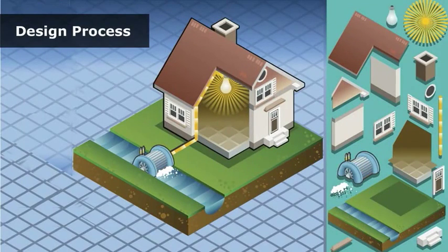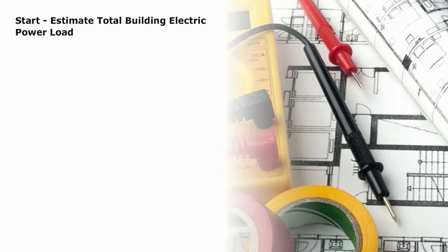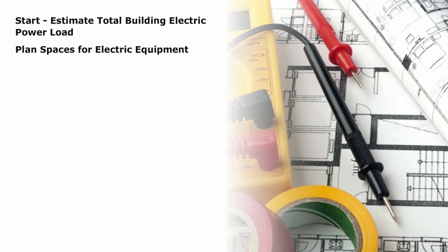Designers follow a process in developing their vision for their projects. Electrical engineers start the process of designing electrical systems by estimating the total building electrical power load. Then they plan the spaces required for electrical equipment, such as transformer rooms, conduit chases, and electrical closets.